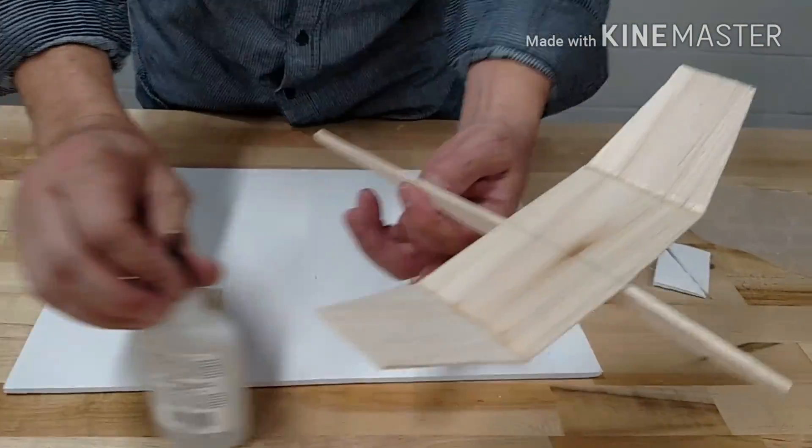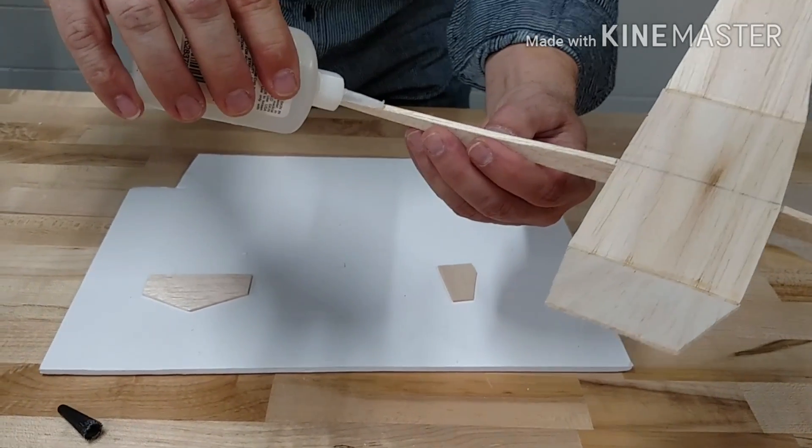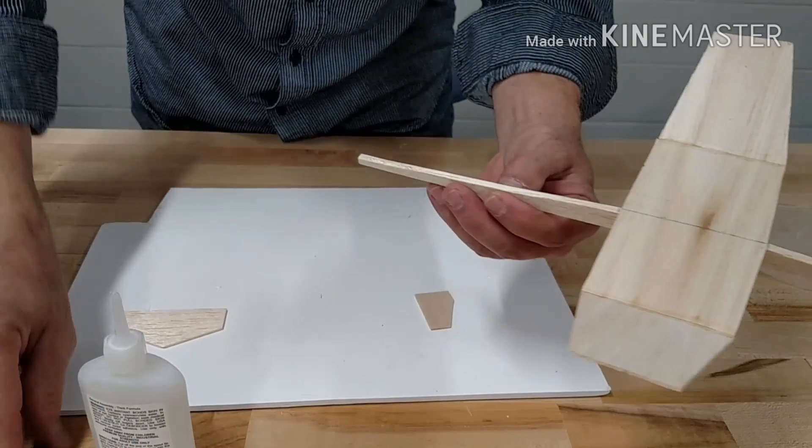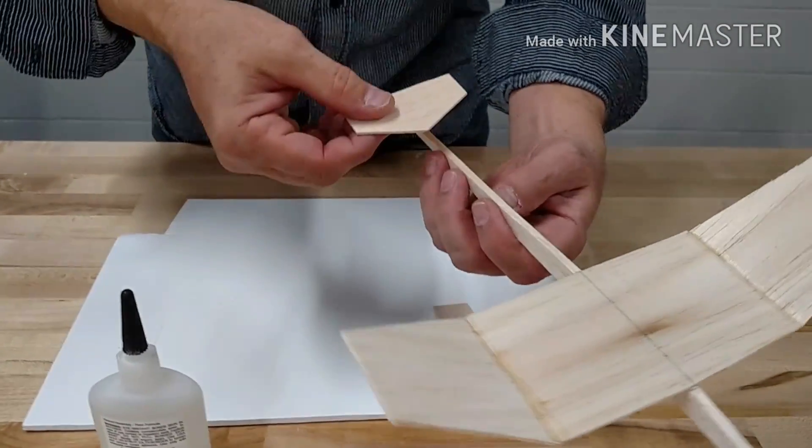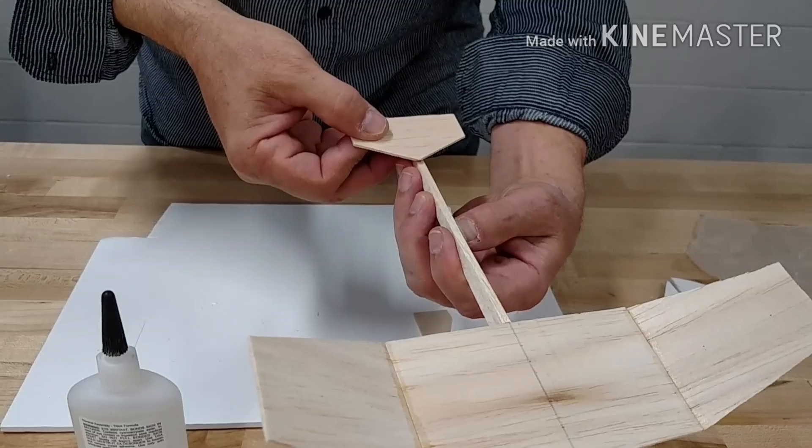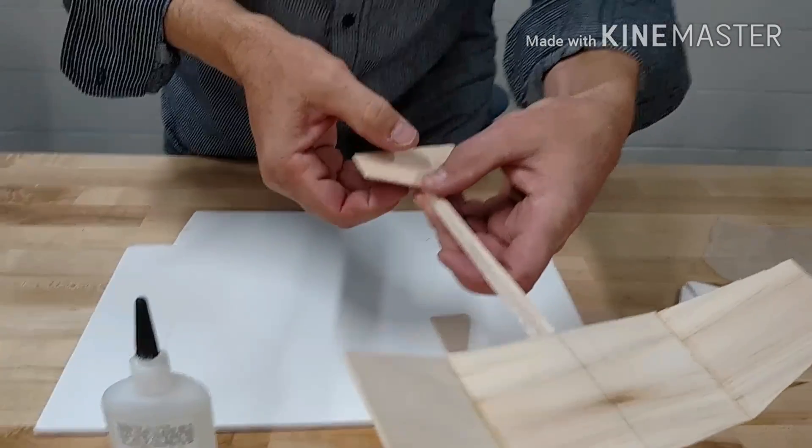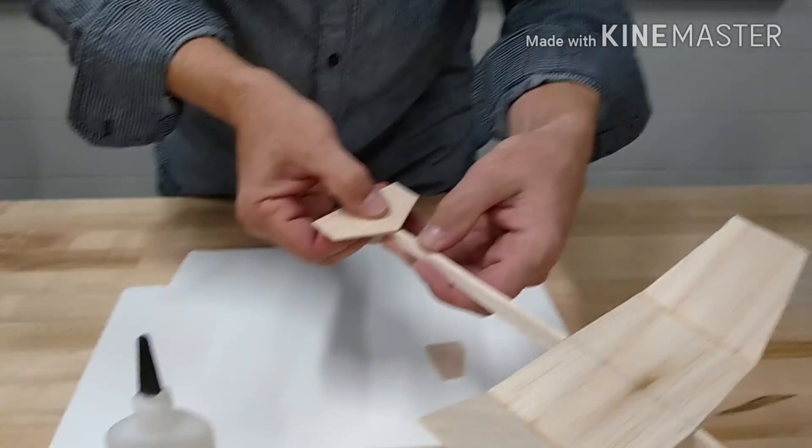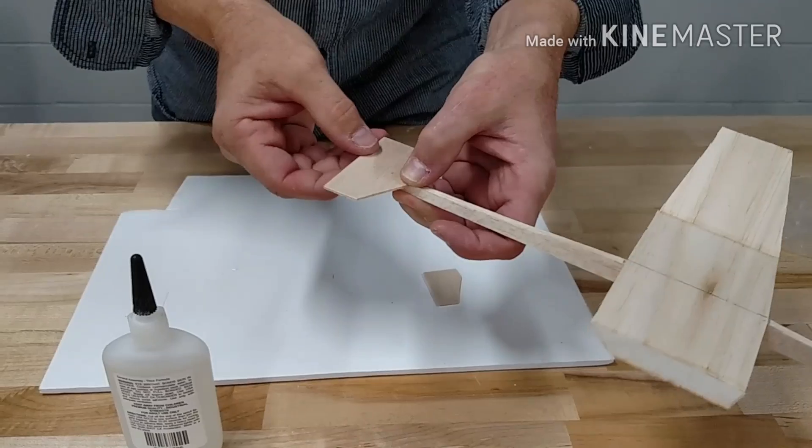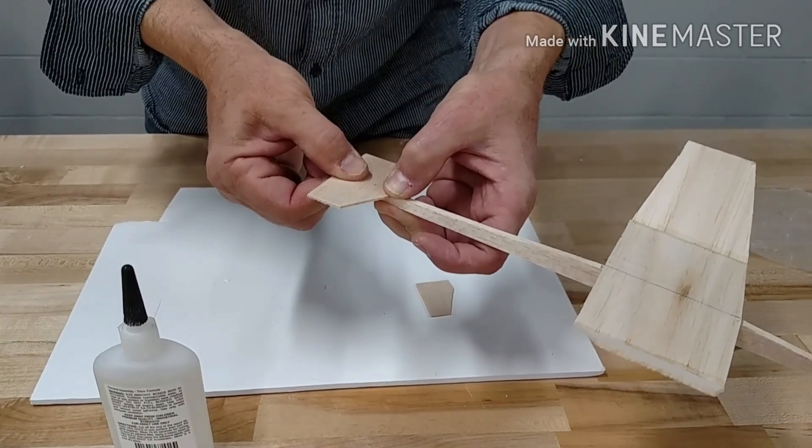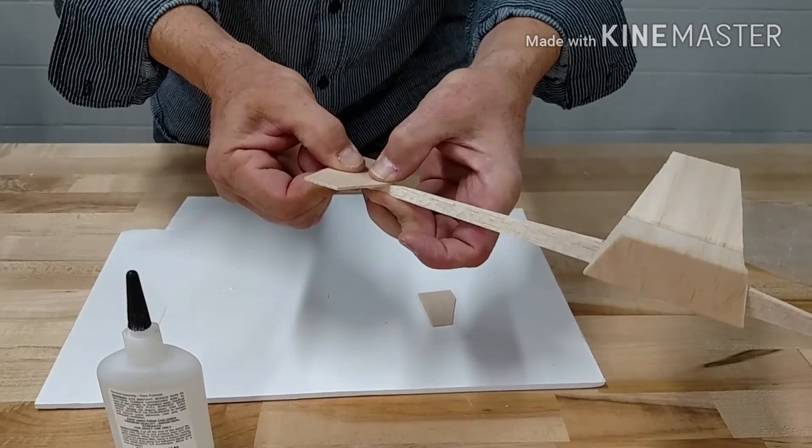So then the next thing you're going to do is your horizontal stabilizer. Basically, it's the same thing. Just putting a little glue on the end. Put my horizontal stabilizer on. This one, I have a point. I also put the pins in the middle so I know where the center is, but I want to center that part right there. And again, I'm just going to hold this down nice and tight until it's dry, which will only take a few seconds. Make sure it's straight and even.